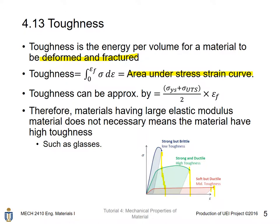Therefore, materials with a large elastic modulus do not necessarily mean that the material has high toughness. For example, glass has a very large elastic modulus because it is very hard to deform without breaking. But once it deforms, it breaks, and that means it will not have a very high toughness. Here is a picture demonstrating why large elastic modulus does not necessarily mean the material has high toughness.